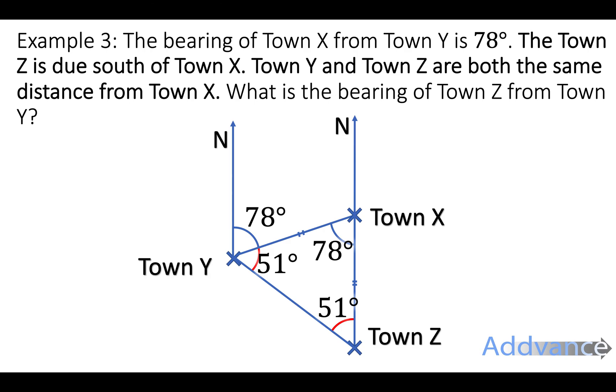It says what is the bearing of town Z from town Y? So we're after this green angle here, which is the angles 78 and 51 added together. 78 plus 51 is 129 degrees, and that's our final answer. So town Z is on the bearing of 129 degrees from town Y, and we are finished. We know the correct answer. You may want to re-watch that example. There's quite a lot of steps to it and it might look a bit scary to you. So please just re-watch that example. Rewind the video and watch again if you would like to see it one more time.